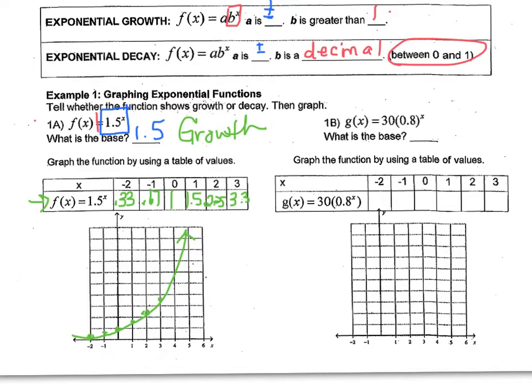So when you go to try B, you're going to think about which one's the base. The base is the one connected to the exponent. So the base is 0.8. Since that's a decimal between 0 and 1, this problem's going to be decay. So what does the 30 mean? That means that's your starting number.